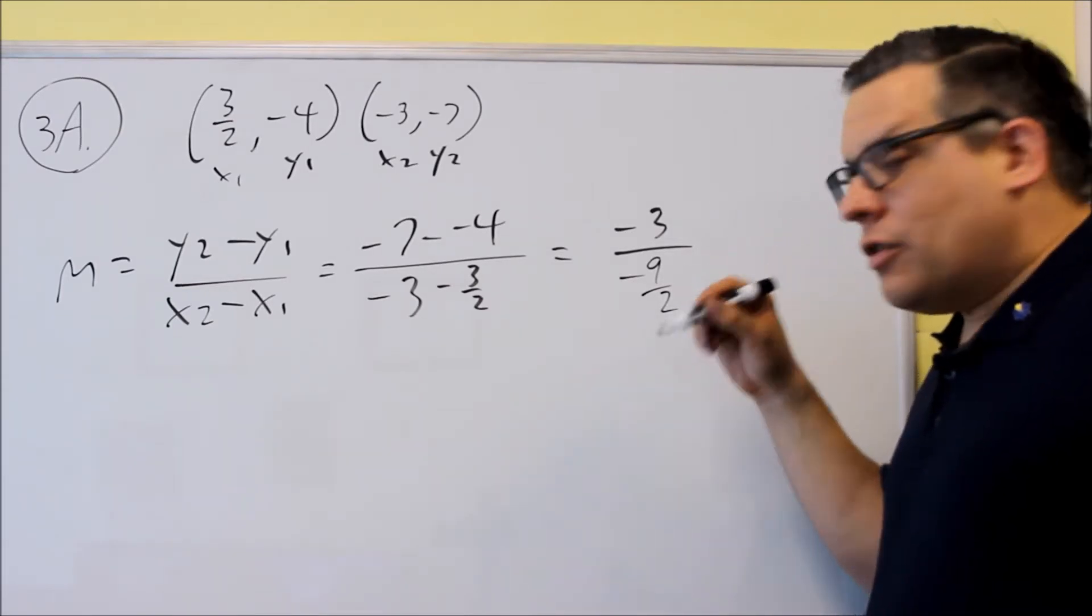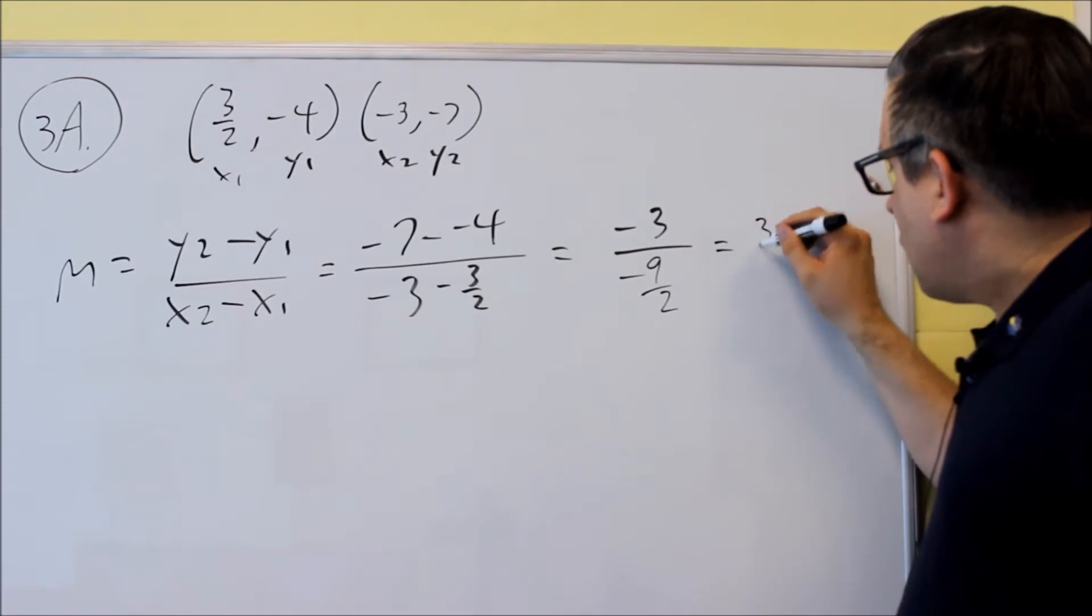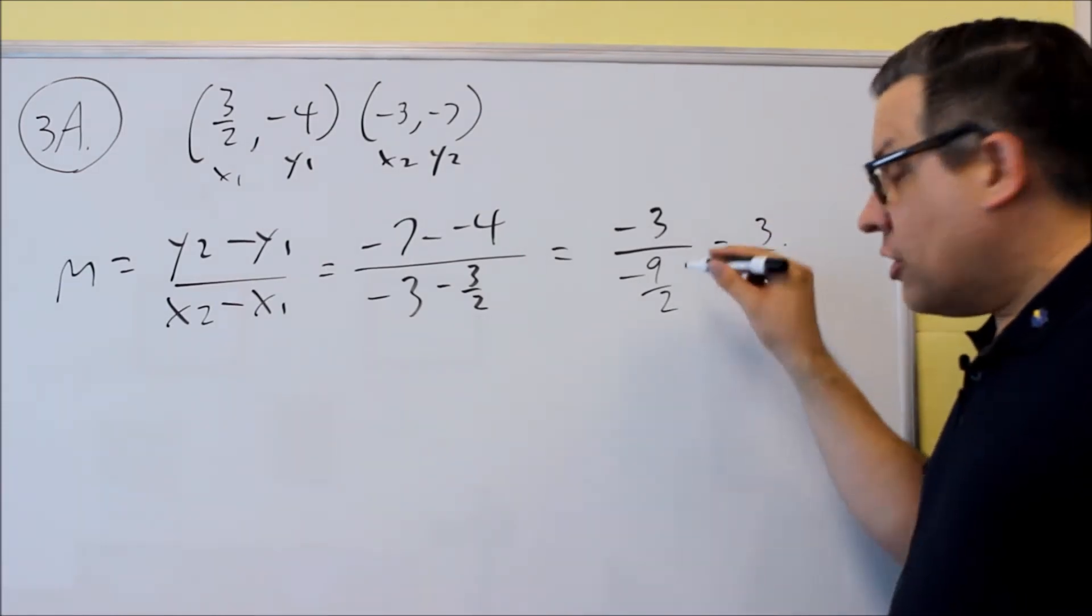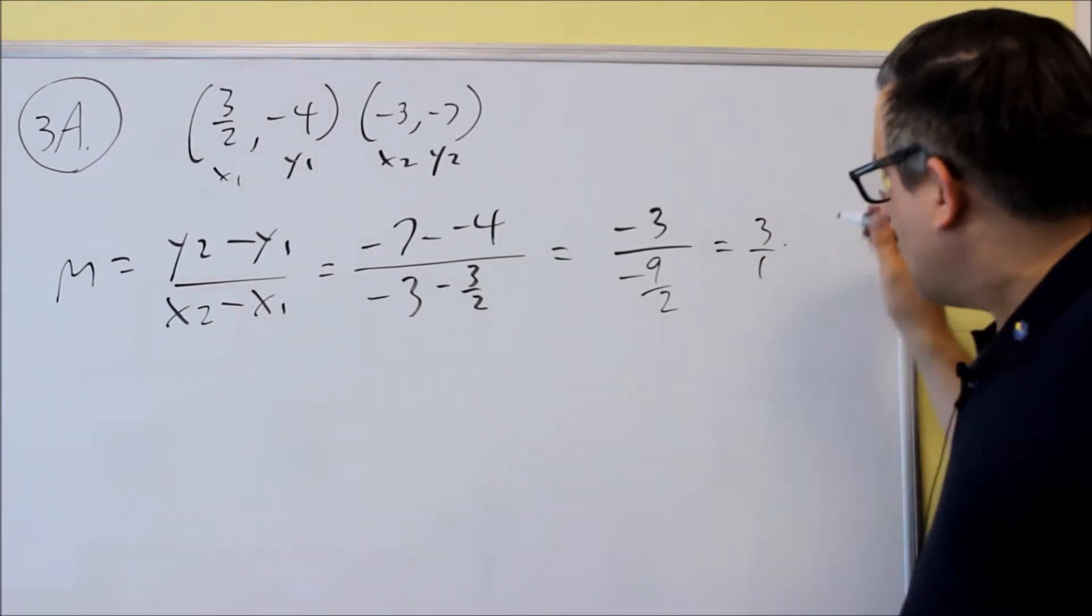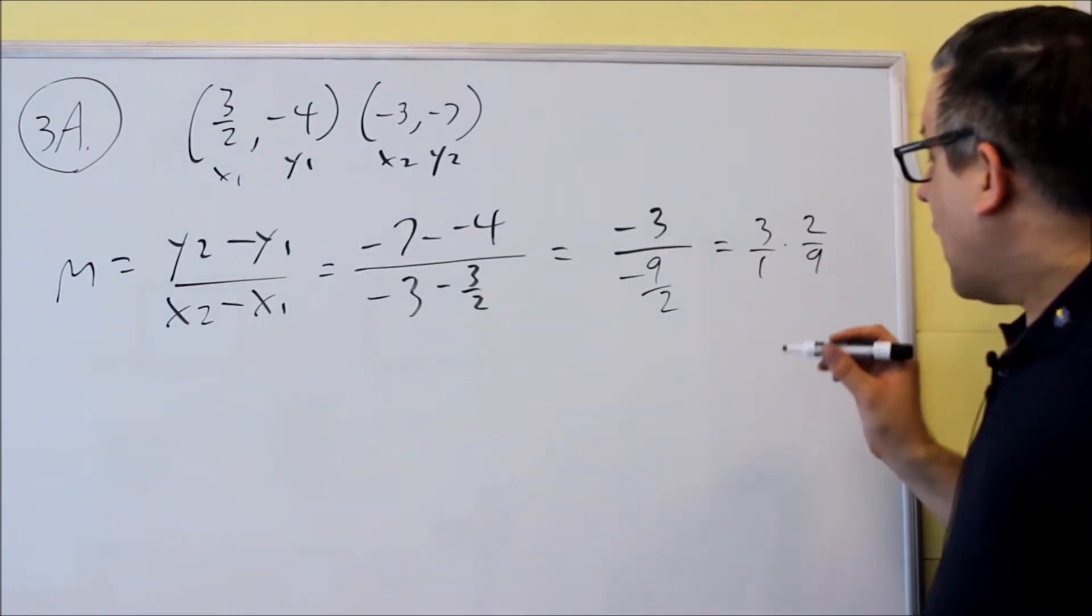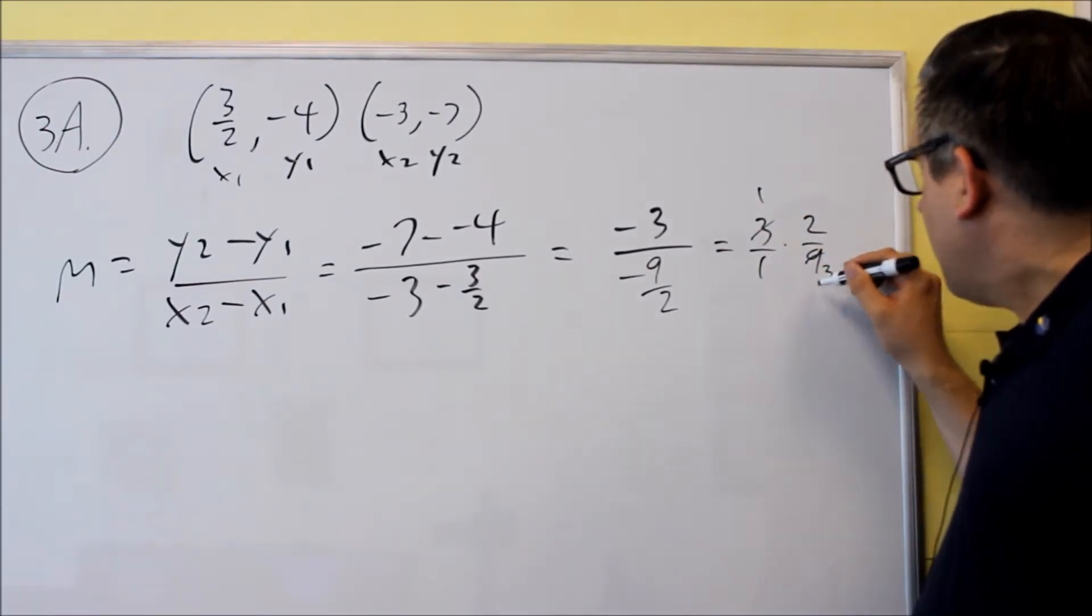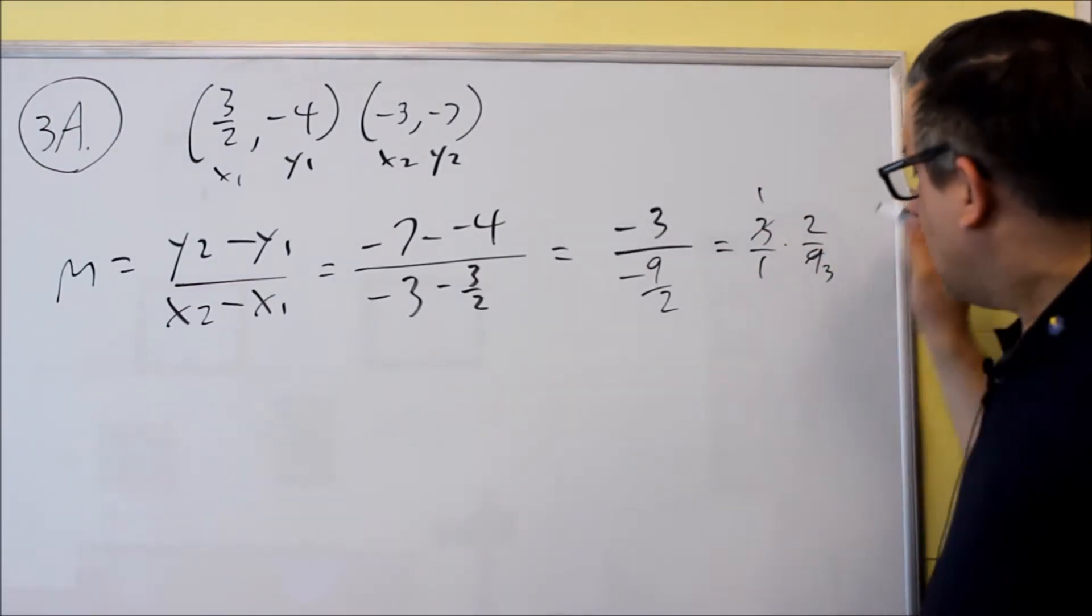Then we're going to flip and multiply. Negatives are going to cancel out, and we'll get 3 over 1, and you're going to multiply that by the reciprocal. So we're going to multiply this by 2 over 9. And then what happens here is we can reduce the 3 right there, and we get 2 thirds.